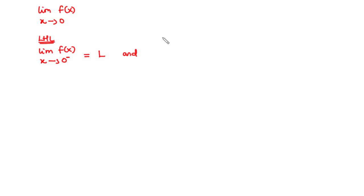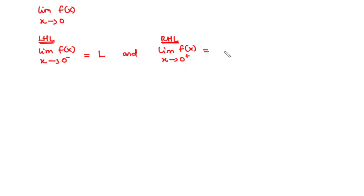Next, we find the right-hand limit. That is given by the limit of the function f of x as x approaches 0, this time from the right. Now, if this limit also exists and is equal to L, then since the left-hand limit is equal to the right-hand limit, the general limit of this function as x approaches 0 also exists and is equal to L.